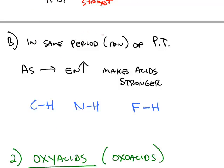When you're looking at the same row of the periodic table, then instead of bond strength, the thing that makes the difference is the electronegativity. As you move to the right in the periodic table, the electronegativity gets bigger.